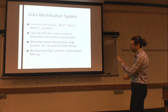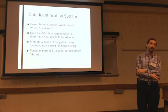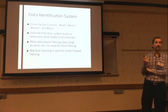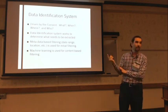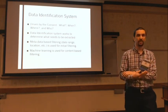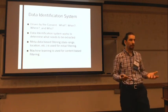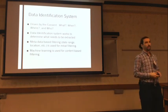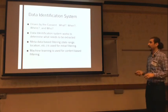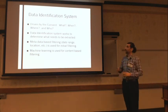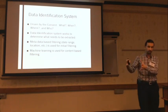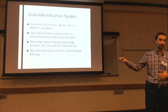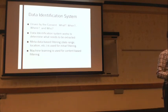The data identification system specifically looks at the four W questions: what happened, when it happened, where, and who performed this. We try to answer all these questions that investigators are typically looking for, in a very specific domain. All this information passes through the data acquisition system, along with metadata filtering and machine learning, depending on what the investigator is looking for.